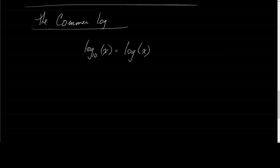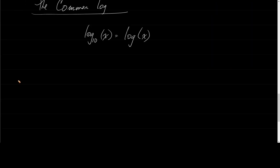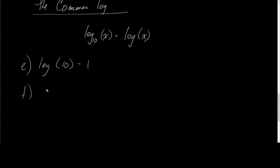Now let's evaluate some of these. If I just wrote log of 10 — well, what power do I raise 10 by to get 10? The power is 1, because 10 to the 1 is 10. What if it was log of 1,000? 10 to some power is 1,000 — that's 3, because 10 to the third is 1,000.